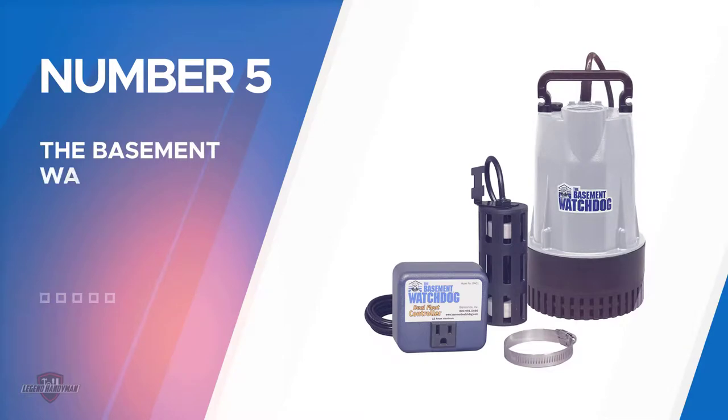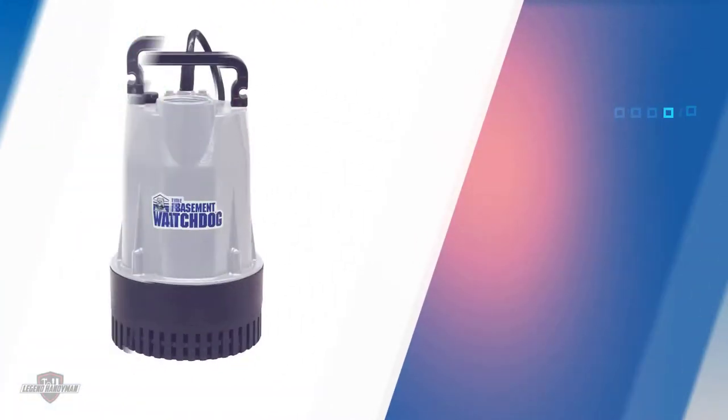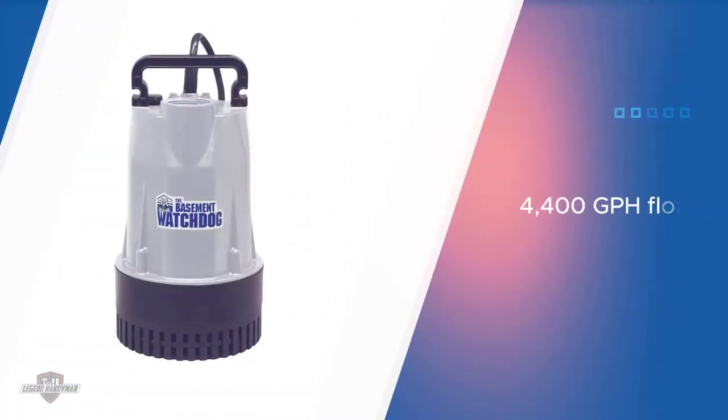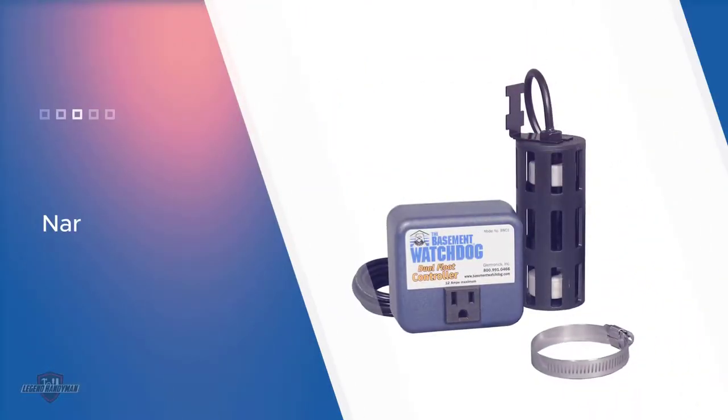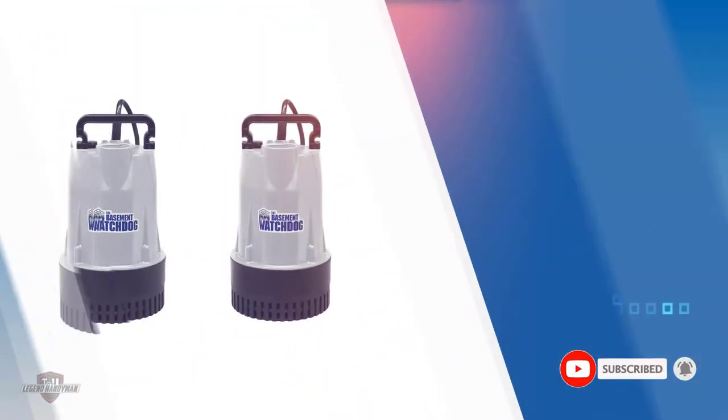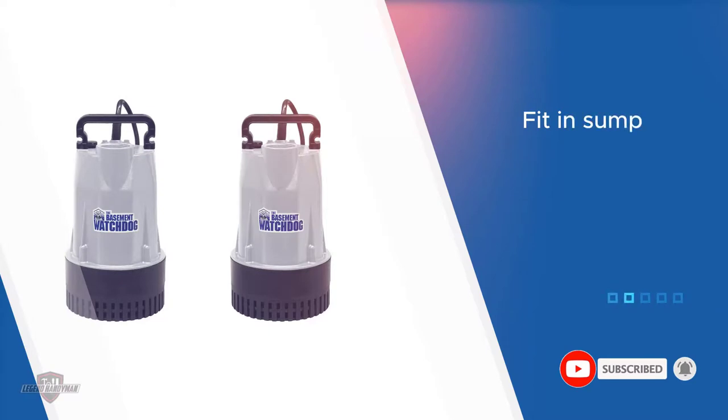Number five: The Basement Watchdog BW1050 sump pump. This pump is priced similarly to the top contenders on this list. On paper, this pump seems to be a decent pump, but in reality it doesn't live up to expectations. With 4,400 GPH flow, this pump won't match its top competitors, but it's not terrible by any means.